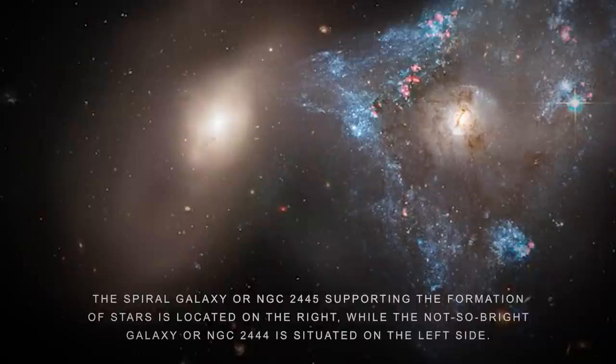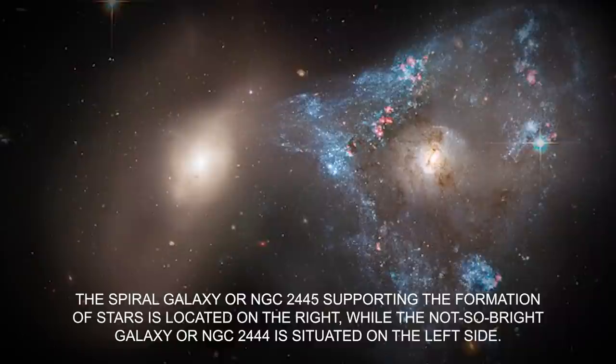The spiral galaxy, or NGC 2445, supporting the formation of stars, is located on the right, while the not-so-bright galaxy, or NGC 2444, is situated on the left side.